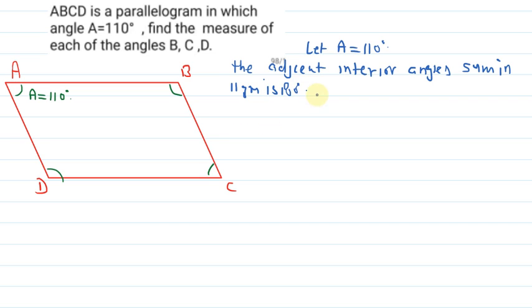So, according to this, angle A plus angle D is equal to 180 degree. So we can say here, angle A is given that 110 plus angle D is equal to 180 degree. We can calculate angle D is equal to 180 degree minus 110 degree. So here, angle D is equal to 70 degree.